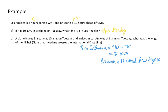Moving on to part B: a plane leaves Brisbane at 10am on Tuesday and arrives in Los Angeles at 6am on Tuesday. What is the length of the flight time? We are crossing the international date line in this calculation. To work out the flight time, we need to work with departure and arrival times in the same time zone — I'll use Los Angeles time. We know from part A that 10am Tuesday in Brisbane is 4pm Monday in Los Angeles. The plane arrives in Los Angeles at 6am on Tuesday.